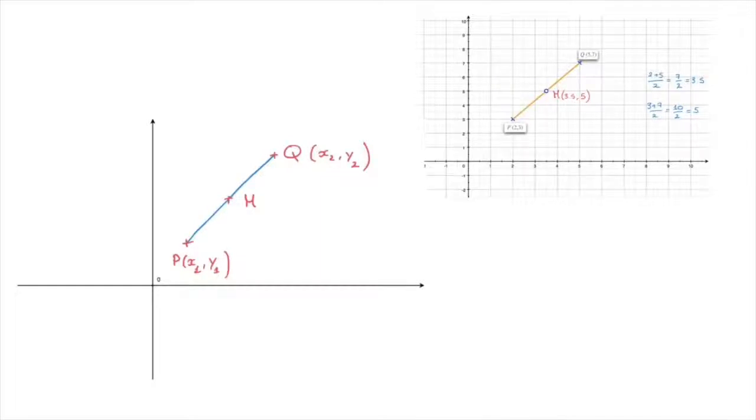M, the midpoint, has coordinates X1 plus X2 over 2, and Y1 plus Y2 over 2. Now, all this formula is actually saying is that the X coordinate of the midpoint is the average of the X coordinates of its two endpoints, X1 and X2. Similarly, the Y coordinate of the midpoint is the average of the Y coordinates of its two endpoints, Y1 and Y2.